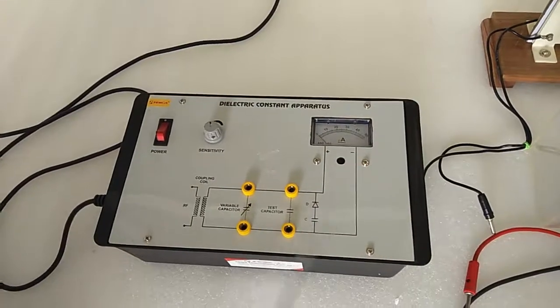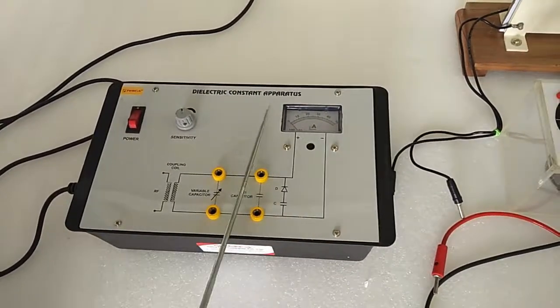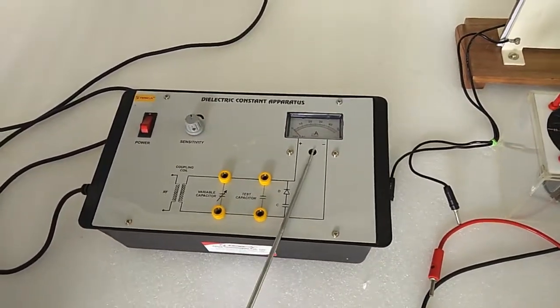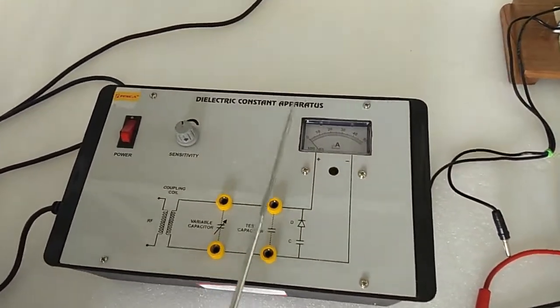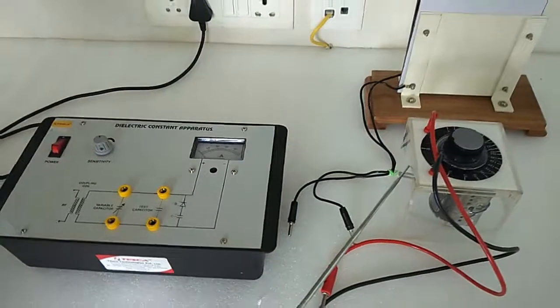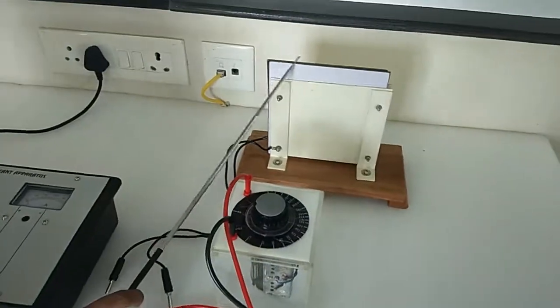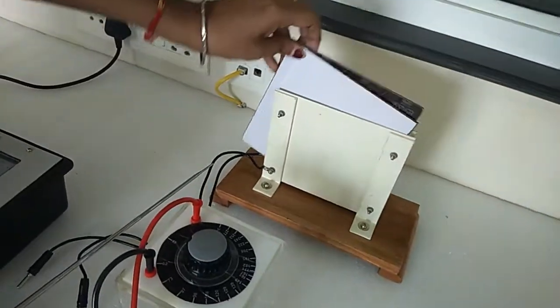This is the circuit diagram. This is an in-build current ammeter in micro ampere range. This is the variable capacitor and this is test capacitor. This is the dielectric plate to perform the experiment.